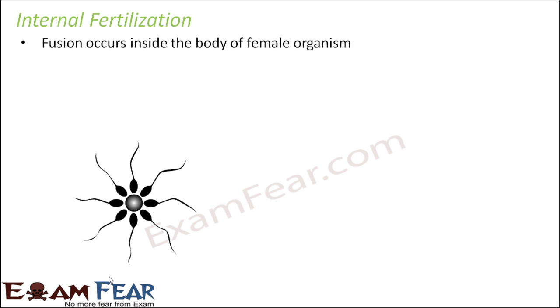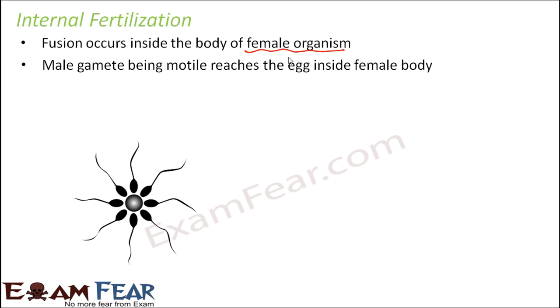In internal fertilization, fusion occurs inside the body of the female organism. The male gamete is motile but the female gamete is non-motile, so the female gamete remains inside the female body. The male gamete travels inside the female body and the fusion takes place there.